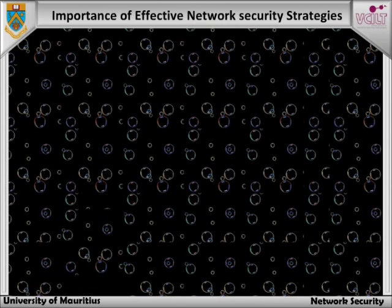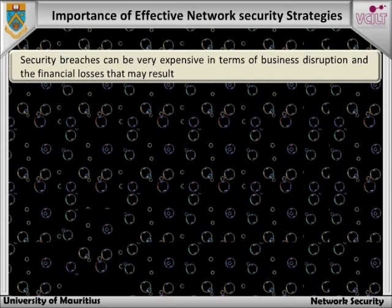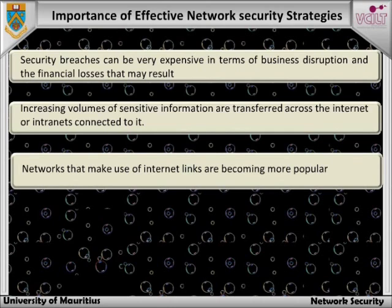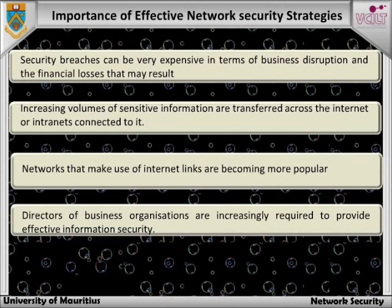Reasons why organizations need to devise effective network security strategies include the following. Security breaches can be very expensive in terms of business disruption and the financial losses that may result. Increasing volumes of sensitive information are transferred across the Internet or intranets connected to it. Networks that make use of Internet links are becoming more popular because they are cheaper than dedicated lease lines. This, however, involves different users sharing Internet links to transport their data. Directors of business organizations are increasingly required to provide effective information security. Countermeasures to the perceived threats must balance the degree of security to be achieved with their acceptability to system users and the value of the data systems to be protected.